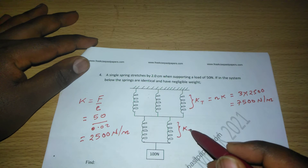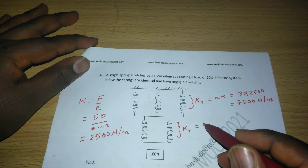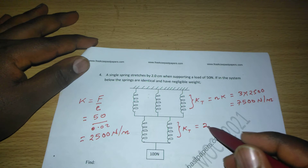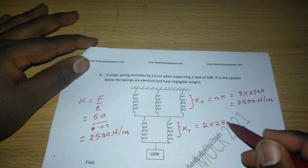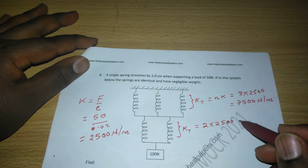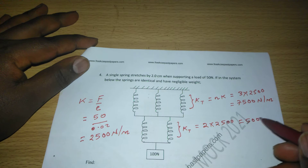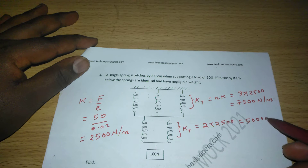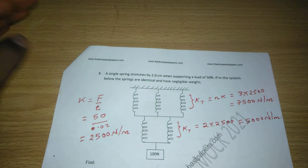For the upper combination, we have three springs, so the total spring constant is 3 times 2,500, giving 7,500 newtons per meter. For the lower combination, we have two springs, so the total spring constant is 2 times 2,500, giving 5,000 newtons per meter. These are the spring constants for each part of the system.